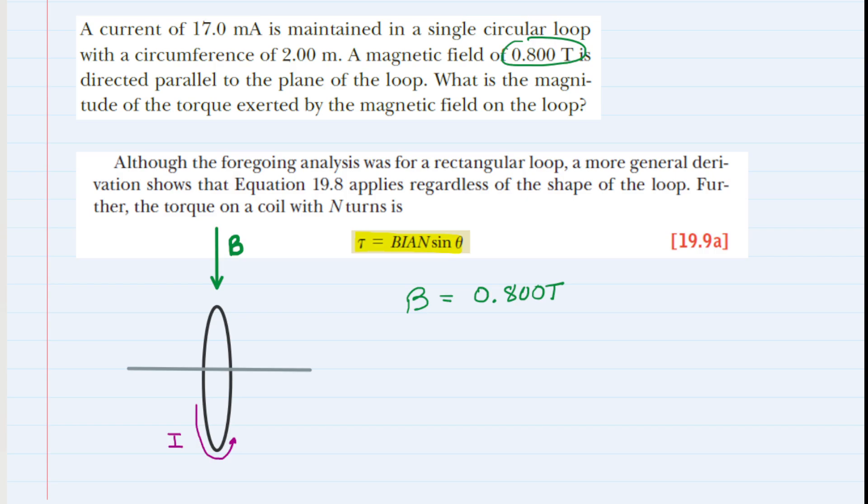We also have the current flowing through the loop, represented by the letter I. That was given in the problem as 17 milliamps. If you have current in milliamps, you need to convert it into the standard unit of amps by multiplying by 10 to the minus 3, because 1 milliamp is 10 to the minus 3 amps.